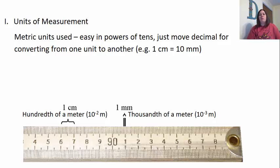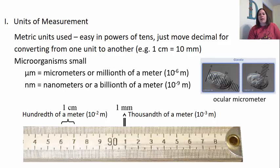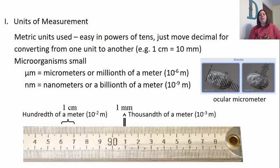This helps with converting from one unit to another. For example, one centimeter is going to be 10 millimeters — you move the decimal just one time. But since we're looking at microorganisms, they're super small, a lot of times smaller than millimeters. So we're going to use two other types of measurement. One is called micrometers, which are a millionth of a meter — 10 to the negative six. And then there's also nanometers, which are a billionth of a meter — 10 to the negative nine.